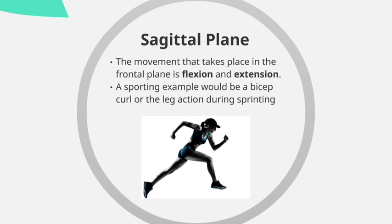The movement that takes place in the sagittal plane is flexion and extension. Flexion is decreasing the angle at a joint, whereas extension is increasing the angle at a joint. A sporting example would be a bicep curl or the leg action during sprinting. In the diagram, the sprinter's right leg shows flexion both at the hip and the knee, and in the left leg there is extension at the hip and the knee.